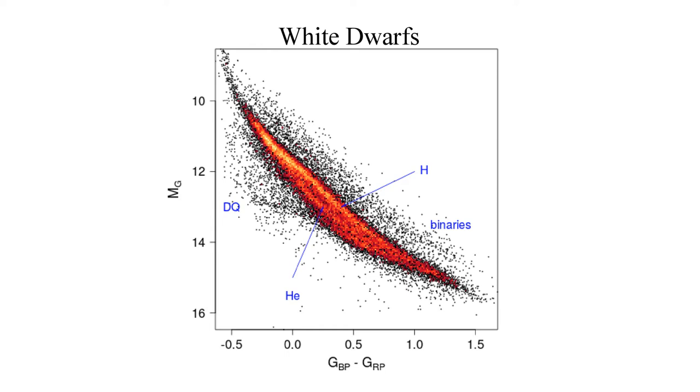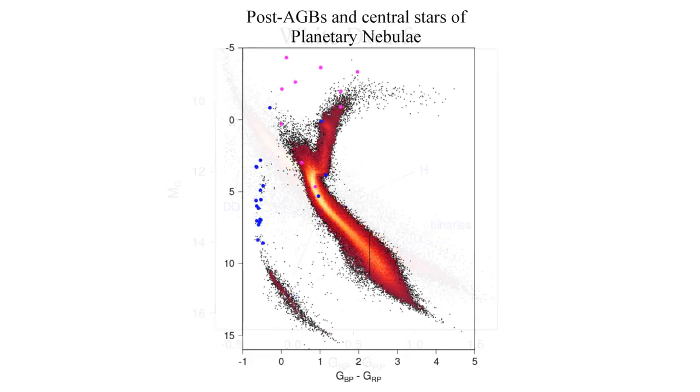We also detect stars belonging to the very rapid phases which moves an end-of-life red giant to post-AGB, then central planetary nebula, before falling to the white dwarf cooling sequence.